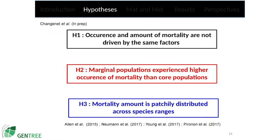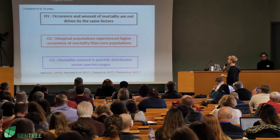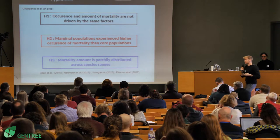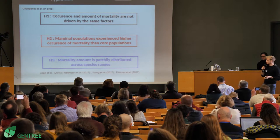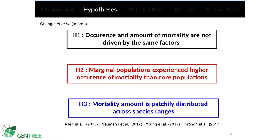From that, I tested three hypotheses. First hypothesis: occurrence and amount of mortality are not driven by the same factors. Second hypothesis: marginal populations experience higher occurrence of mortality than core populations. Third hypothesis: mortality amount is spatially distributed across the species' ranges.